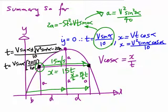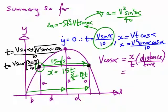Let's add them together. The total distance is b plus 2d over the time taken. So v cos alpha equals v² sin alpha cos alpha on 10.